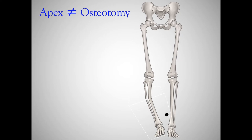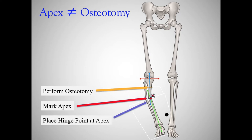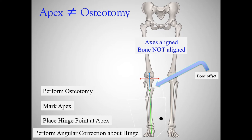What if your osteotomy is away from the apex? In this example, we have our apex marked, we have our magnitude, and we've placed our osteotomy in the proximal aspect. You hinge around your apex and what happens? You get significant bony malalignment. Interestingly, the axes are aligned and theoretically this is an adequate correction for the axis, but clinically that's not acceptable — you have minimal bone contact and a very large displaced fragment on the medial side of the lower leg. This is not going to work.